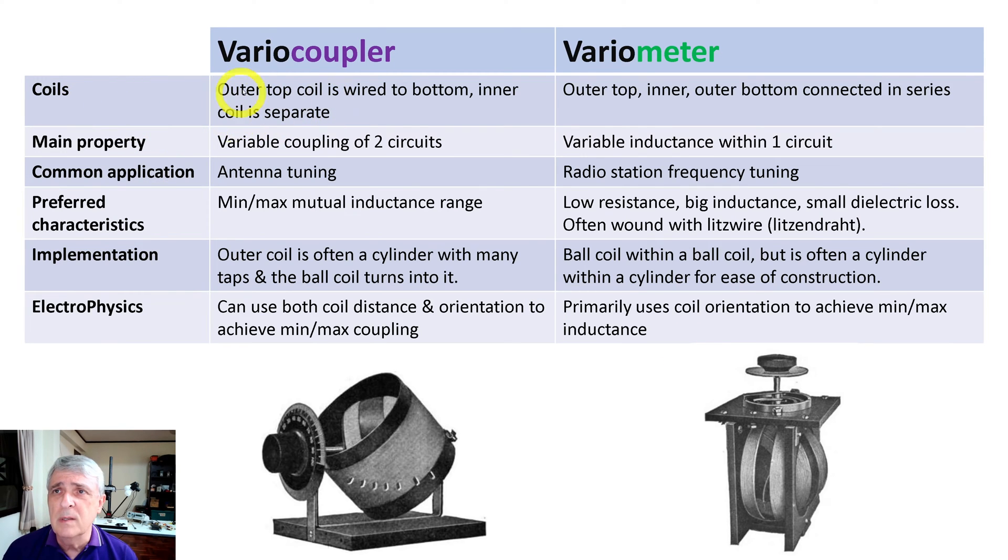Of the differences. Most of these we've already talked about, but here's the variocoupler and the variometer. So outer top coil is wired to the bottom, inner coil is separate. So yes, this coil and this coil inside, they're completely separate circuits. This one, they're wired as one long inductor. So you have variable coupling of two circuits and here we have variable inductance within one circuit.